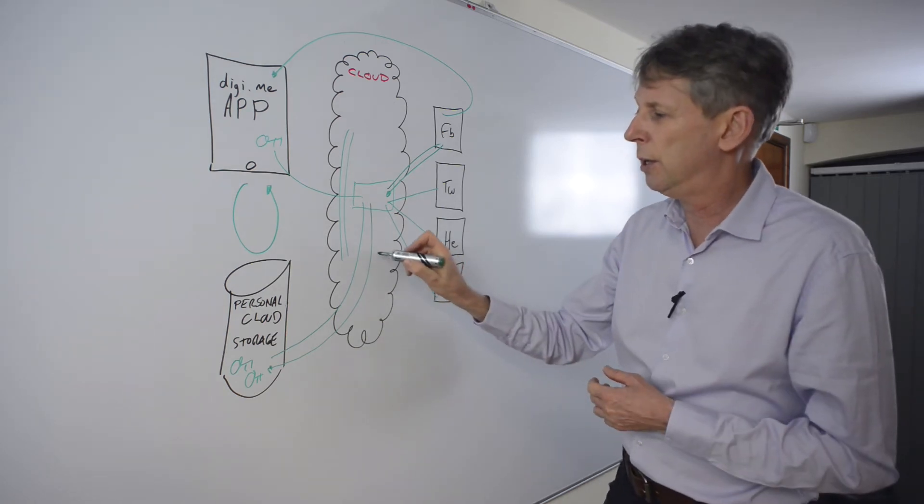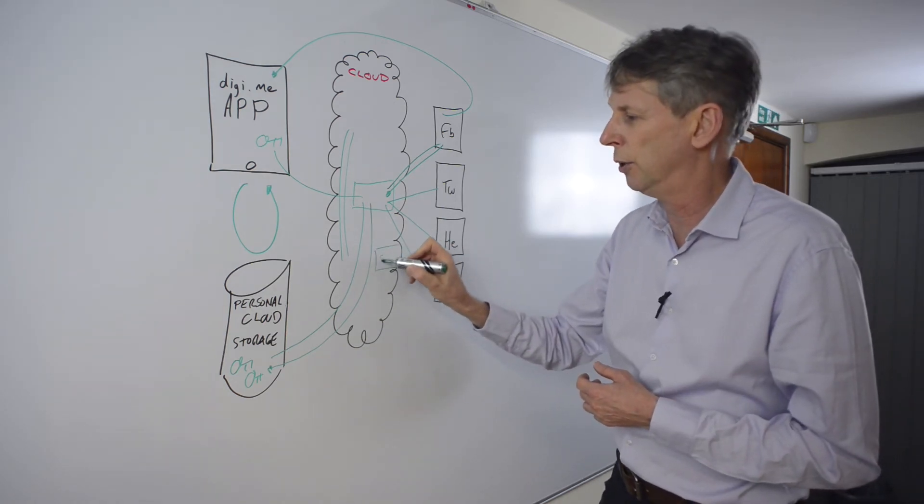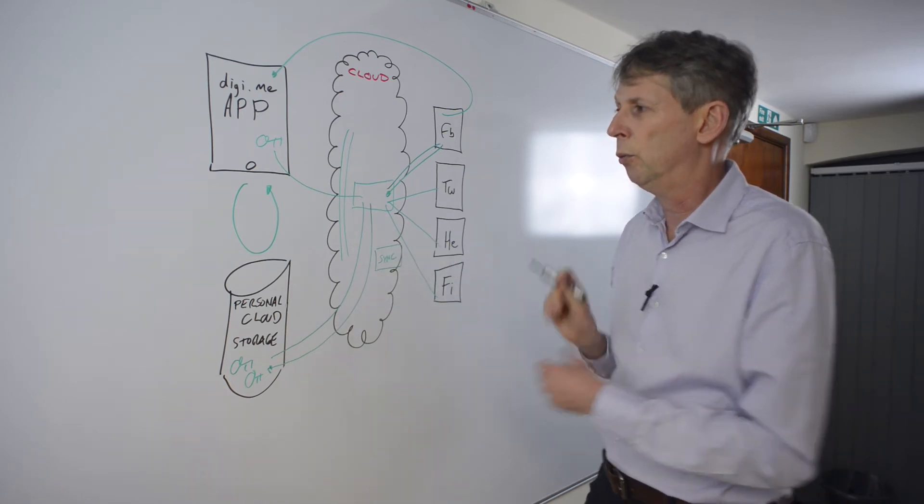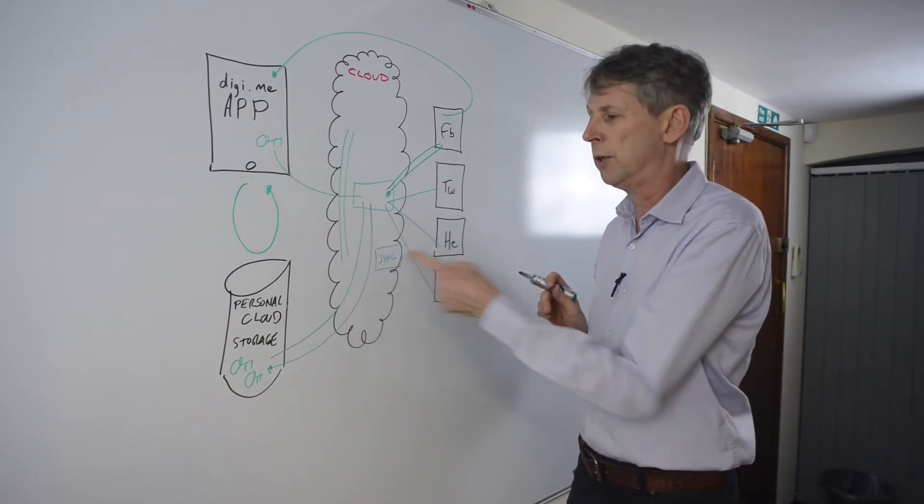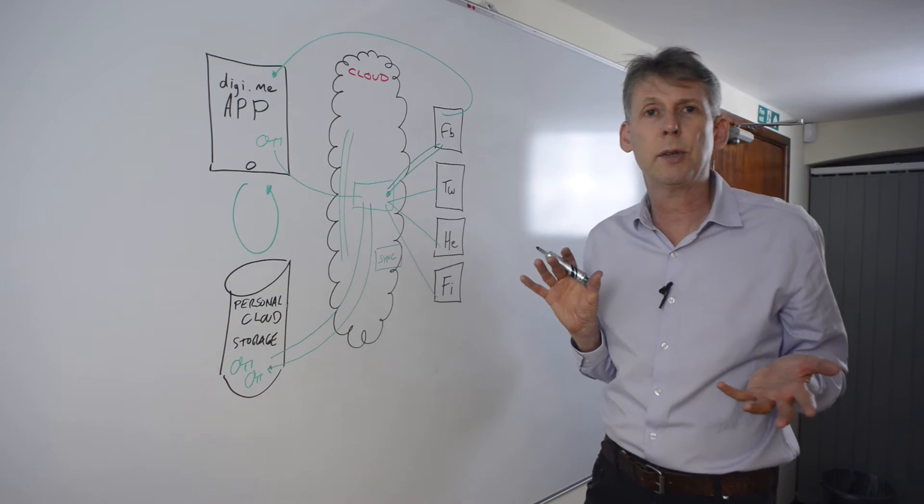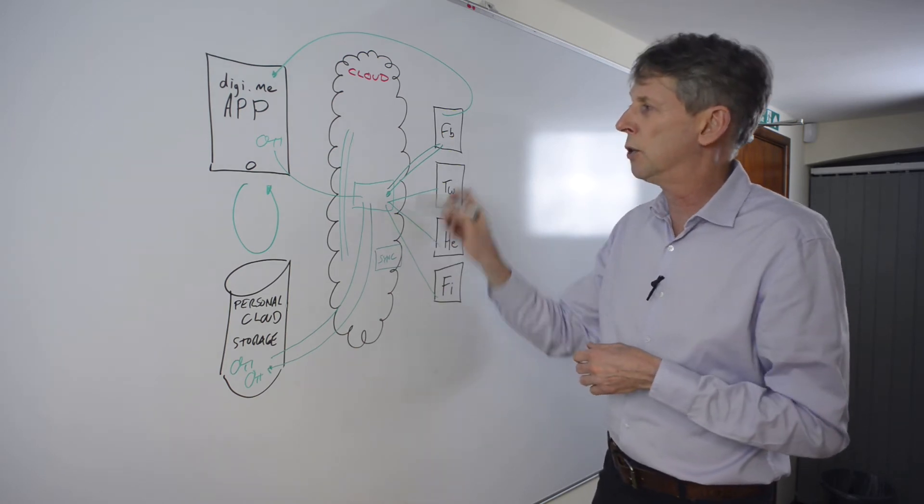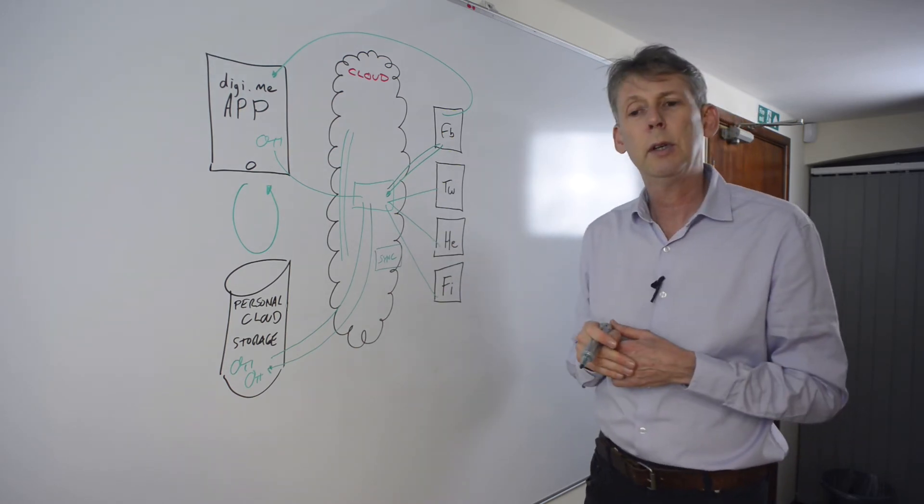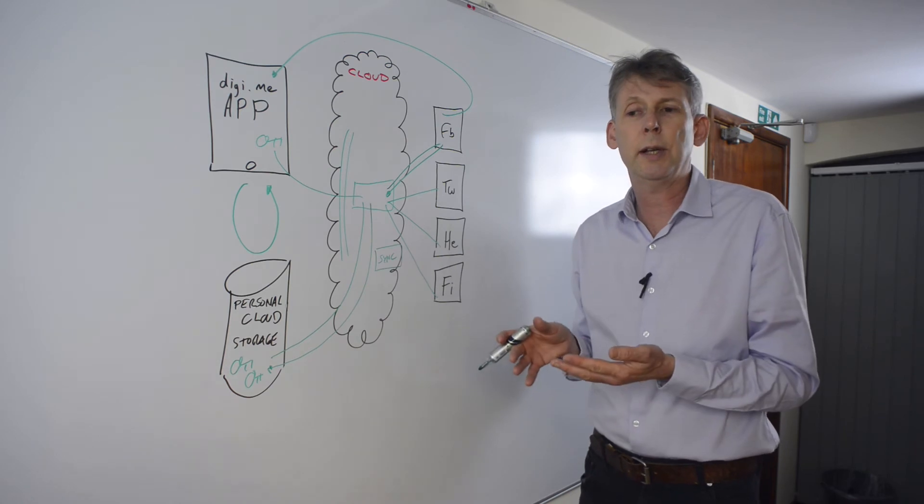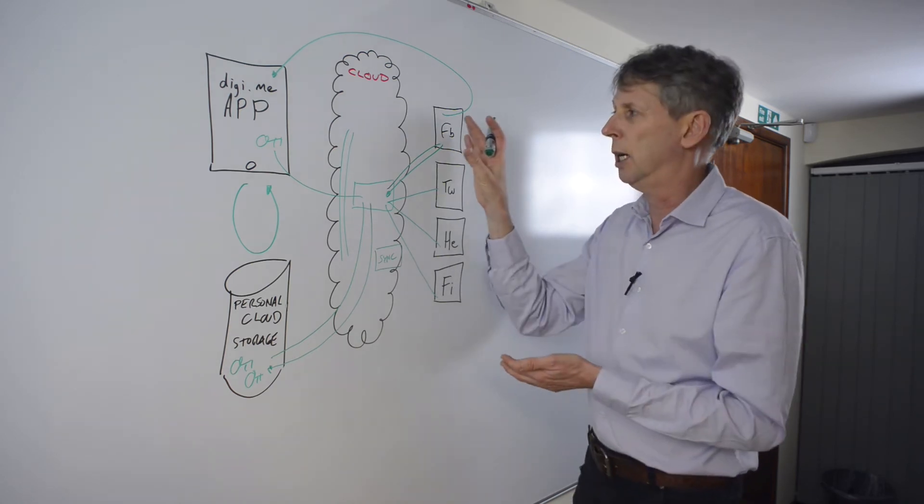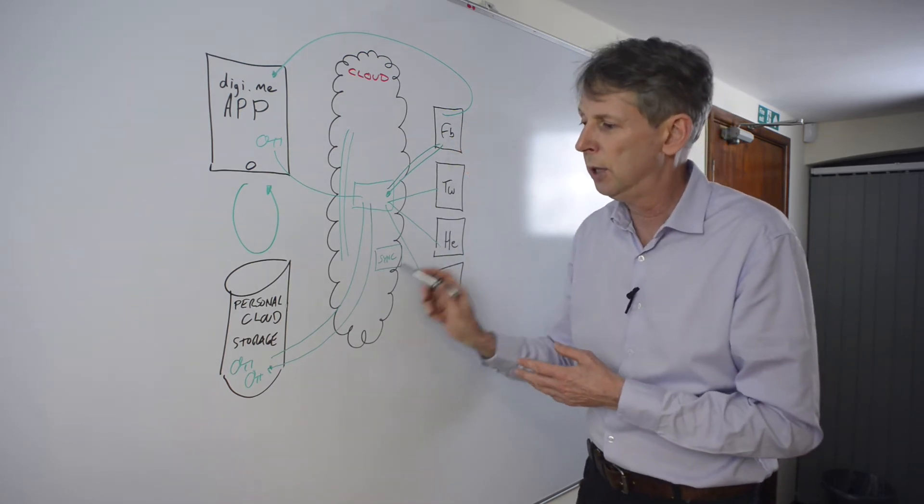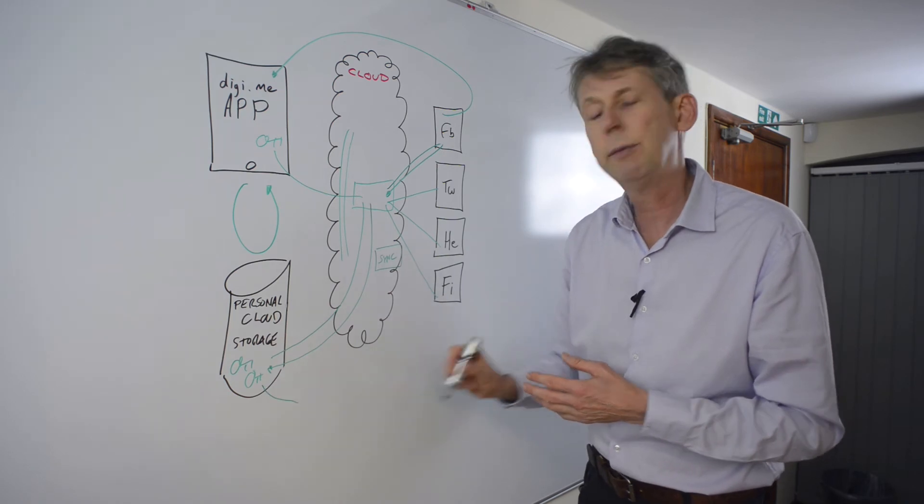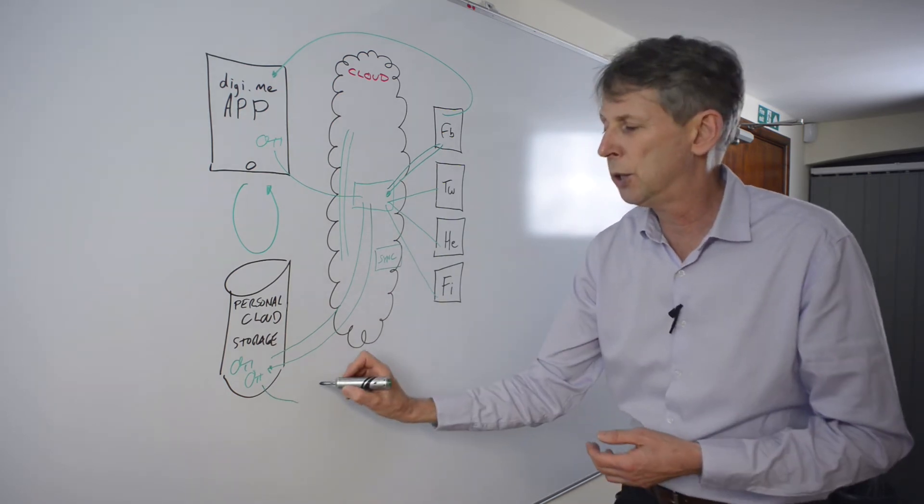And one of the functions that we run in our Cloud Next is a synchronization function which takes users' keys, runs them in a protected area that we as a business can't see and touch, and it now goes to each of these sources and says this user's approved us to fetch their data, please can we have it? And we take all the data from these different places and we put it in this storage.